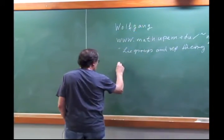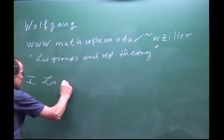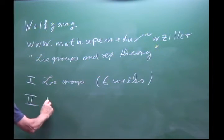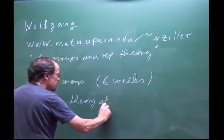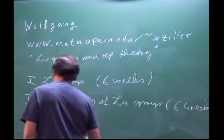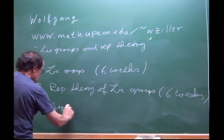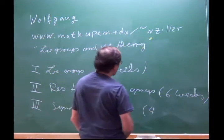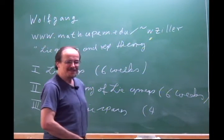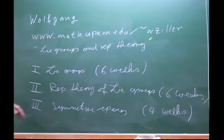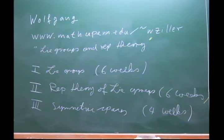There are three topics in the course. Part one will be Lie groups — I expect this will be about six weeks. Part two will be representation theory of Lie groups, probably another six weeks. The third part is symmetric spaces, probably about four weeks — six, twelve, sixteen weeks total. We'll see how quickly we go; if we add topics, it may take a little bit longer.